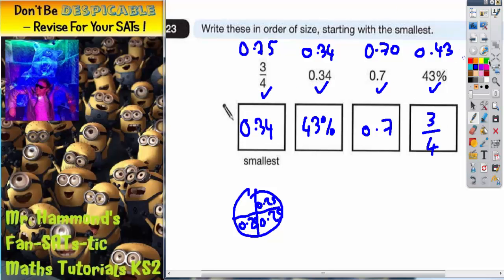The only other thing you could have done was turn them into percentages instead of decimals. If you've done that, you would have ended up with three quarters being 75 percent, 0.34 would have been 34 percent, 0.7 would have been 70 percent, and 43 percent obviously is already a percentage. However, if you've done it this way, you would have still got exactly the same order from smallest to biggest.